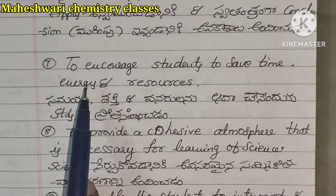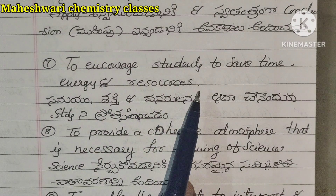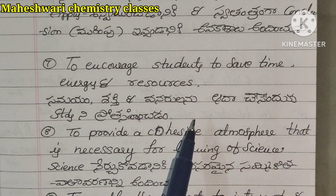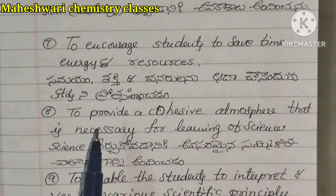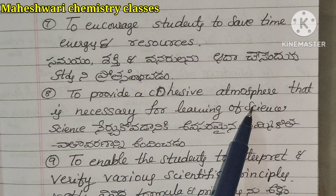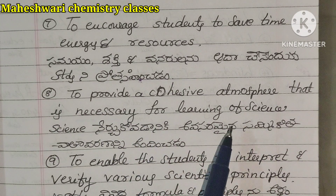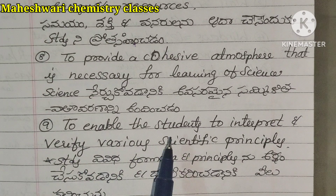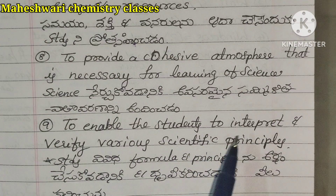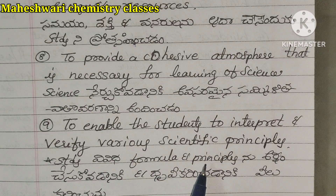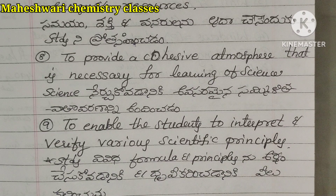Seventh objective: to encourage students to save time, energy, and resources. Eighth: to provide a cohesive atmosphere that is necessary for learning of science. Ninth: to enable students to interpret and verify various scientific principles.